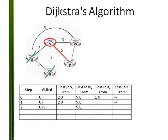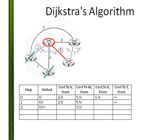Now I consider Y, which I have not visited before. To get to Y, I must add the old cheapest cost to my node V, which is 2 from U, and the cost to my neighbor Y, which is 5. This gives 7. Is this less than the previous cost to Y, which was infinity? Yes, it is. Update the cost, and mark that I can get to Y from V.